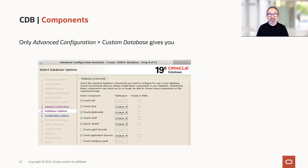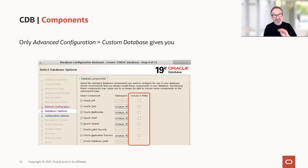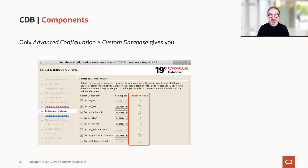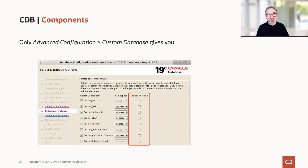Here you see that by default, a lot of components are ticked on for the CDB$ROOT. But be aware: if we do exactly what's shown on that screen, your CDB$ROOT will have all these options installed, but PDB$SEED won't have any of them. The PDB$SEED is a read-only pluggable database — we use it when we provision a new PDB. As soon as you run create pluggable database, it creates a copy of PDB$SEED, and all these copies — like the sons and daughters of PDB$SEED — will have only Oracle server and XDB installed.